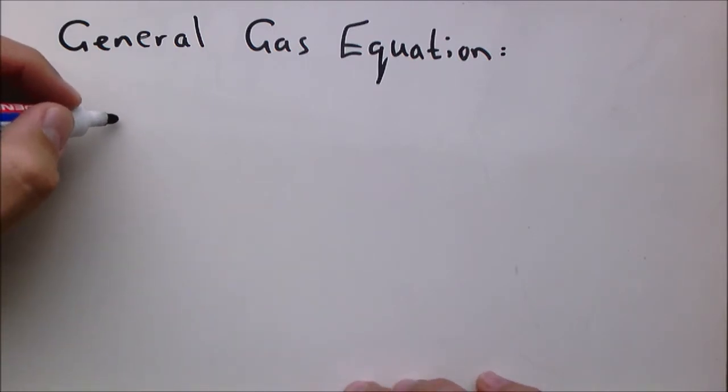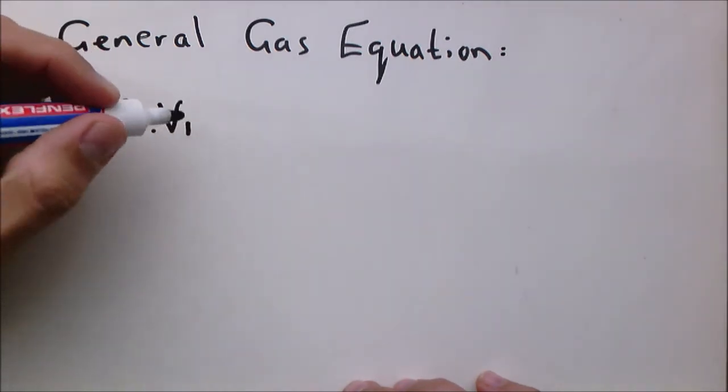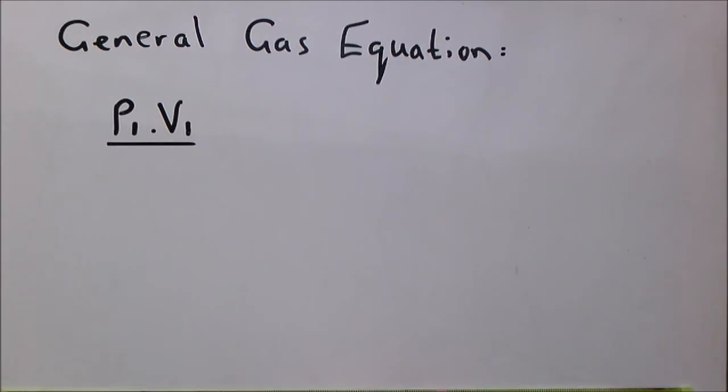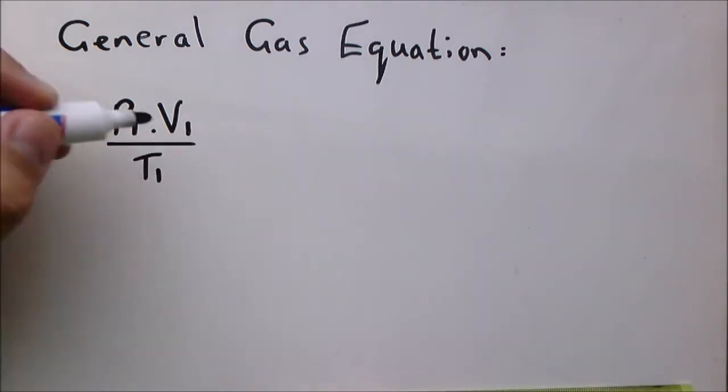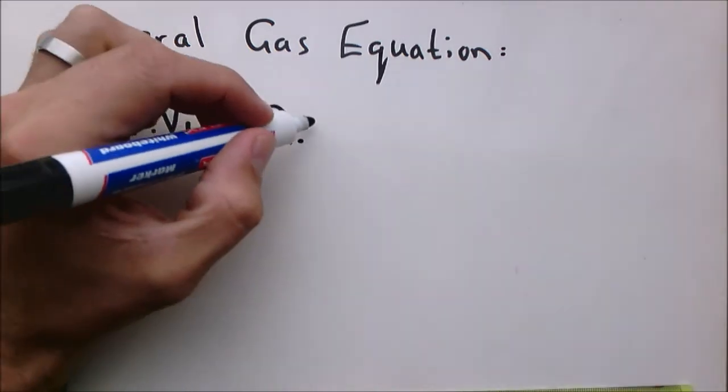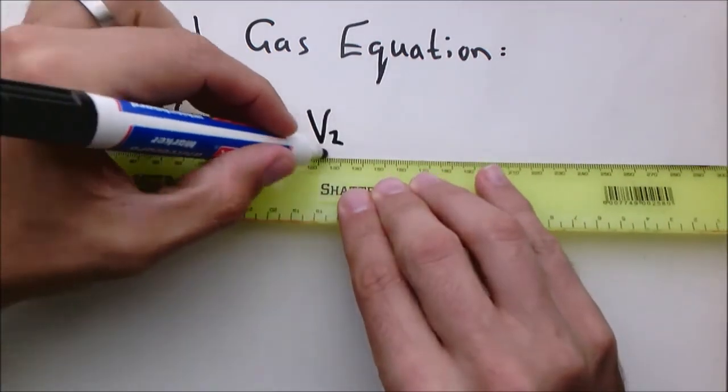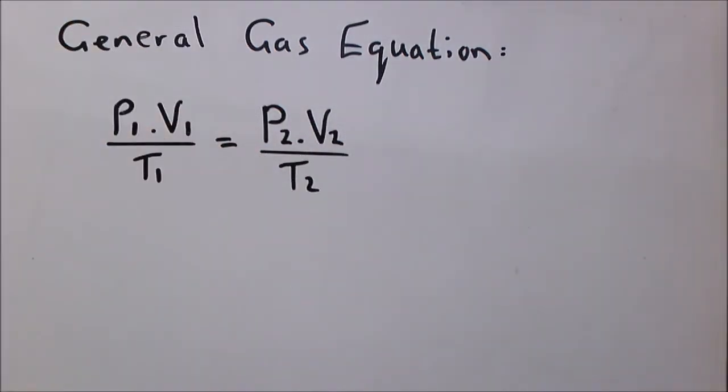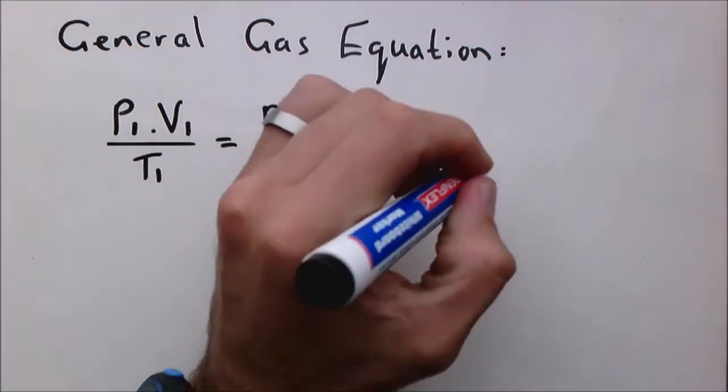So P1 times V1 divided by T1 is equal to P2 times V2 divided by T2. This is a combination between Boyle's law, Charles' law, and Gay-Lussac's law, and the amount of moles remain constant.